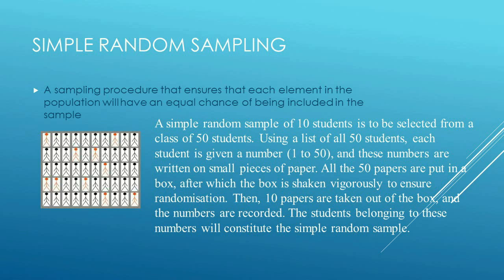Now let's look at probability sampling, where we have four major types. The first is a simple random sample — essentially putting names into a hat on identically sized pieces of paper, shaking it, and pulling out names one by one. Each name had a one-in-however-many chance of being selected. Everybody's name goes into the proverbial hat and every single one has an equal chance of being selected. That is a simple random sample.